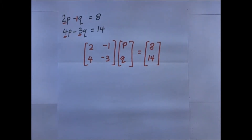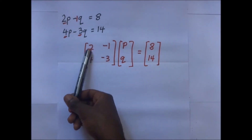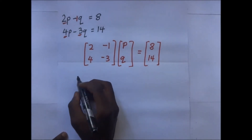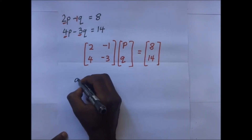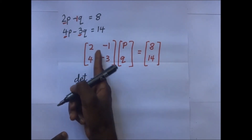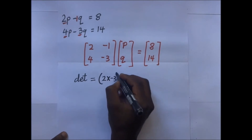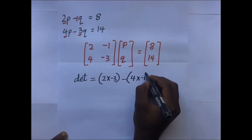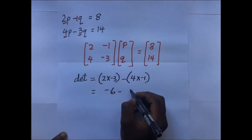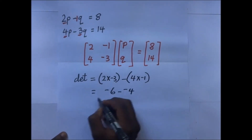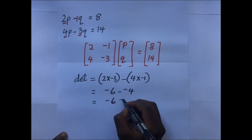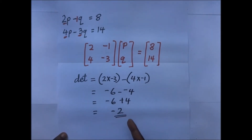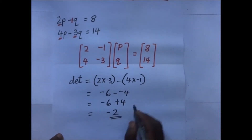We go ahead and find the inverse of this matrix. We first get the determinant: 2 times (-3) minus 4 times (-1) = -6 minus (-4) = -6 + 4 = -2. So the determinant is -2.